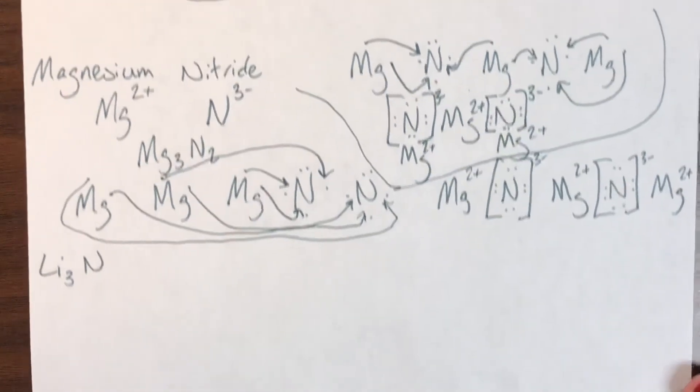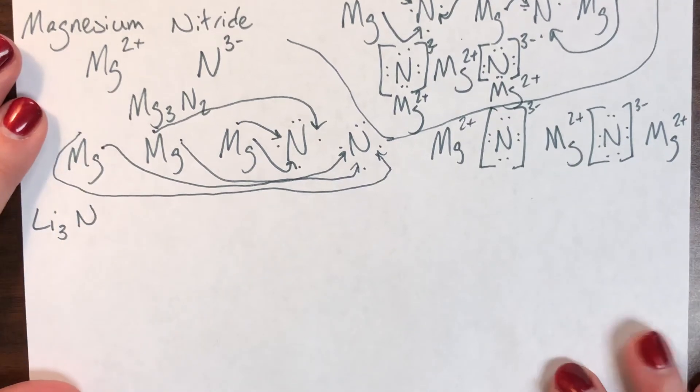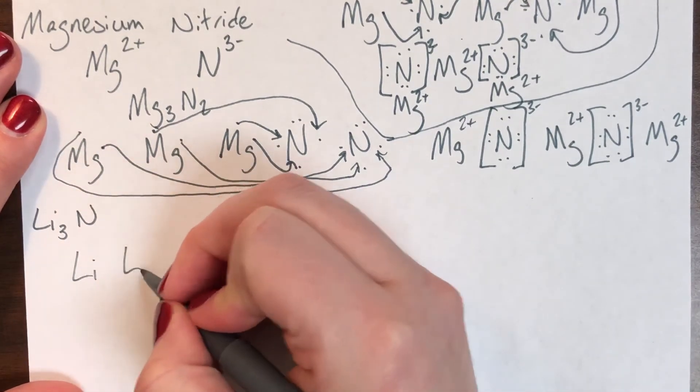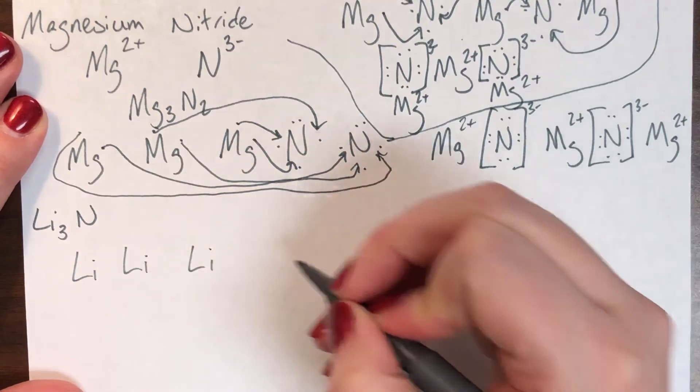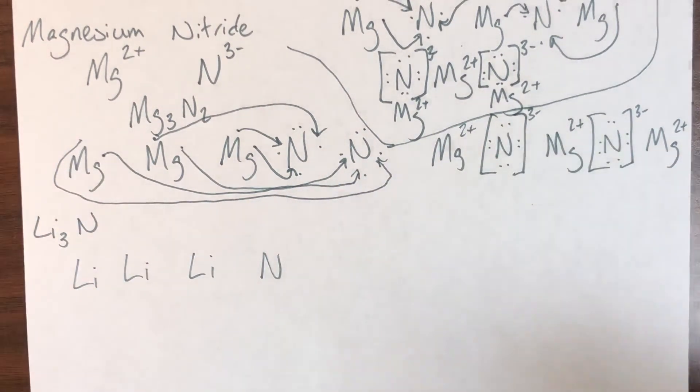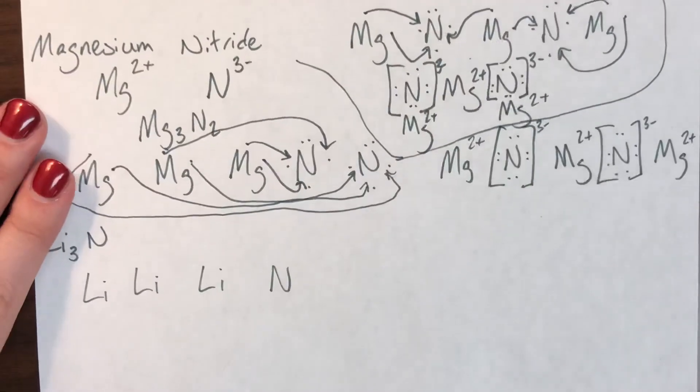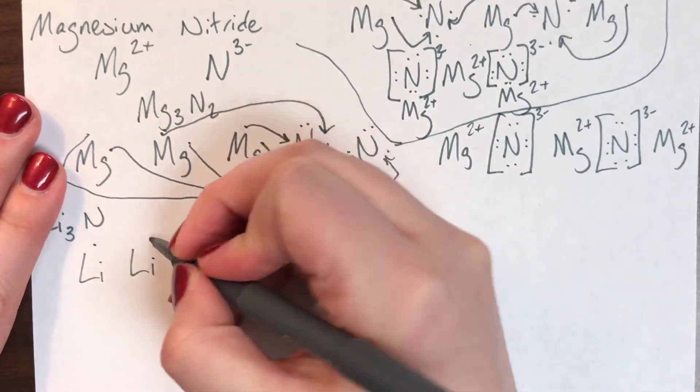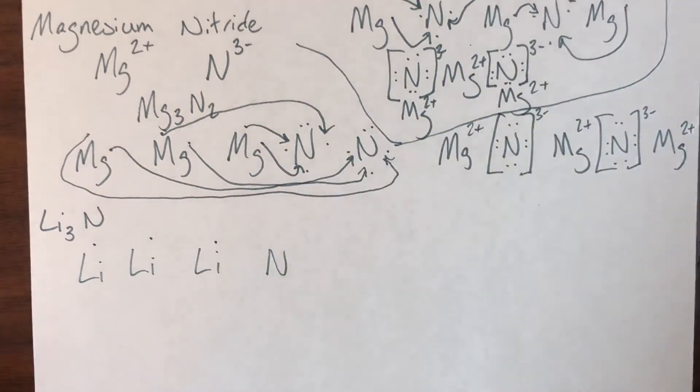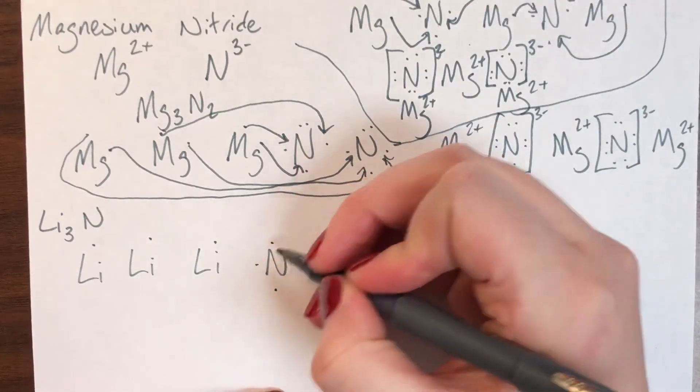The last example that we're going to do is Li3N. So this one is already a formula, so I don't have to figure out how many of each I need. And instead, I'm just going to go ahead and write out three lithiums and one nitrogen. Now I had to figure out how many valence electrons to draw. So lithium is in column one, which means I have to add one valence electron to each lithium. And nitrogen is in column five, so I'll add five to my one nitrogen.